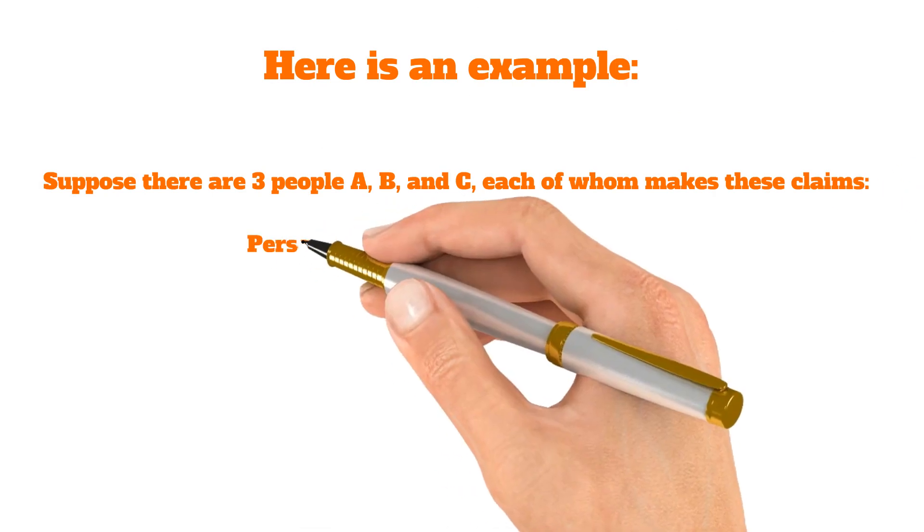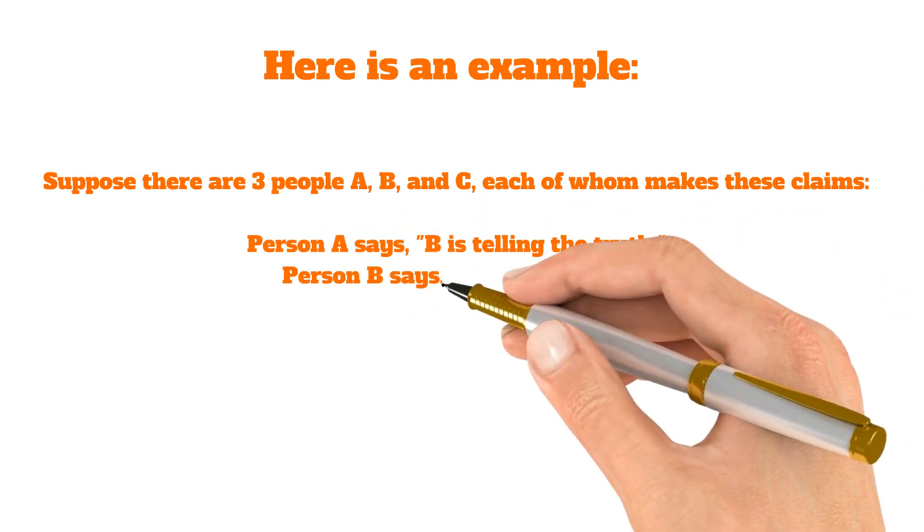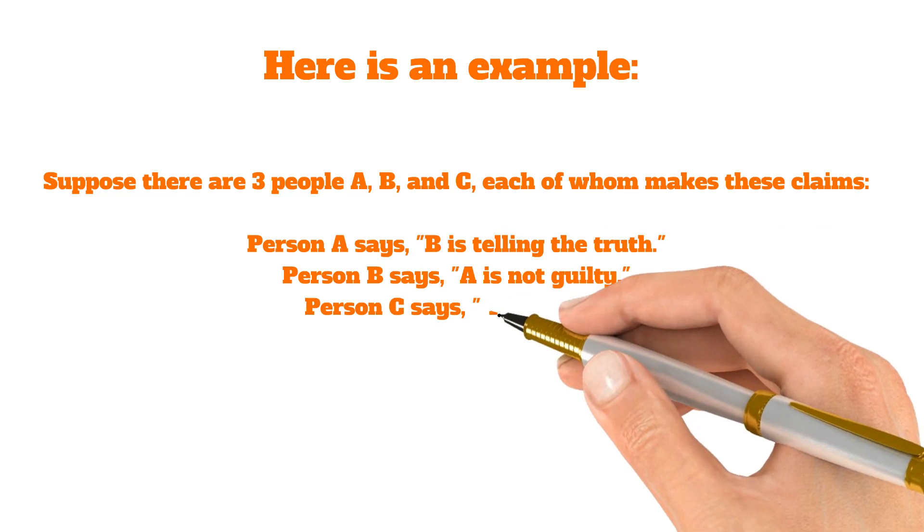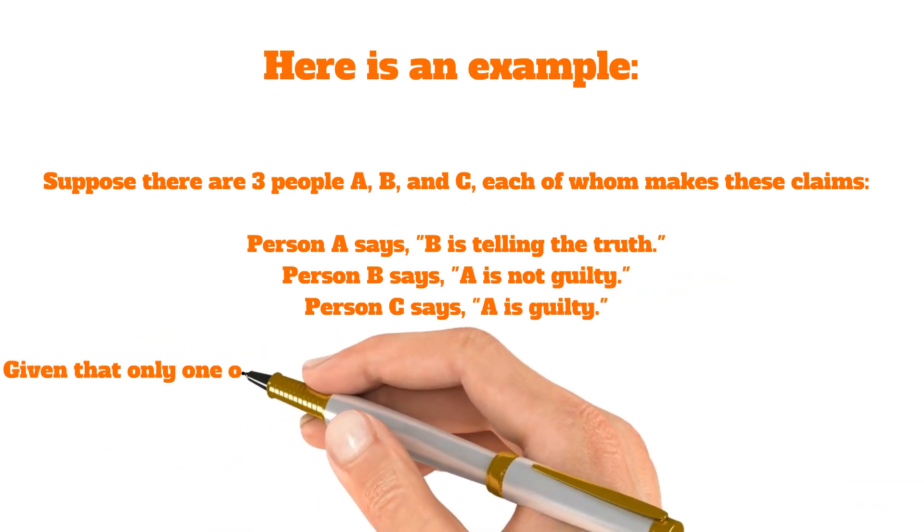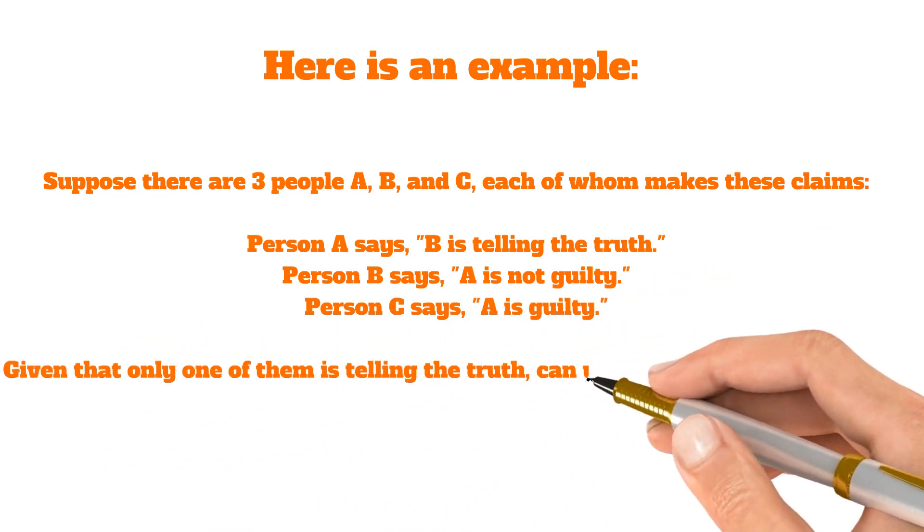Person A says B is telling the truth, person B says A is not guilty, and person C says A is guilty. Given that only one of them is telling the truth, can you determine who's guilty?